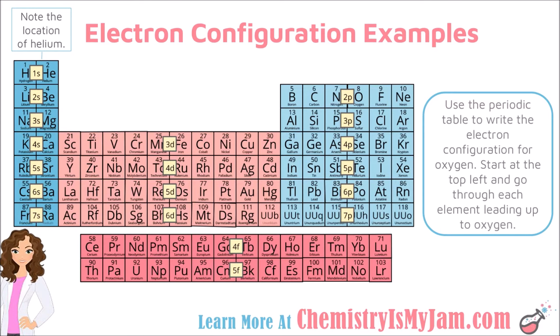The periodic table has been arranged to help us indicate electron configurations. You have an S block, a P block, a D block, and an F block — color coded here. One thing to be aware of: many periodic tables put helium on the far right with the noble gases, which makes sense because helium has similar properties. But for electron configurations, it makes more sense to put helium in the S block because helium only has a 1S sublevel.